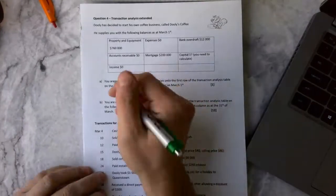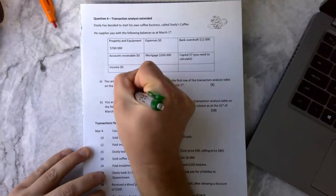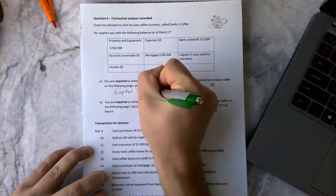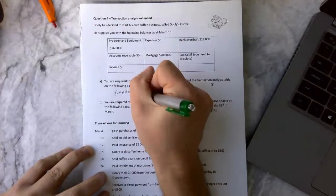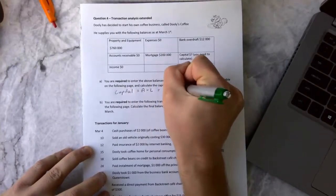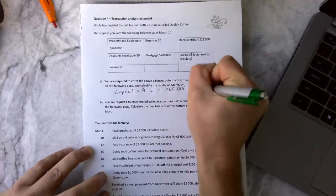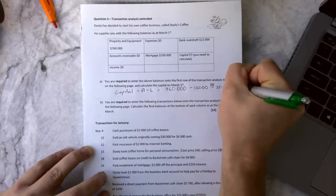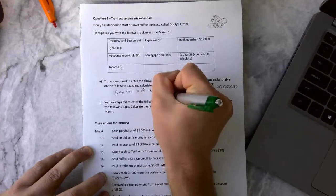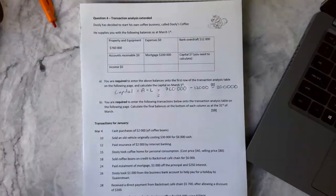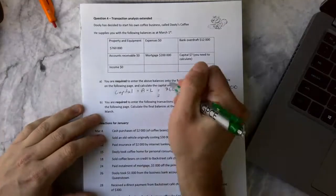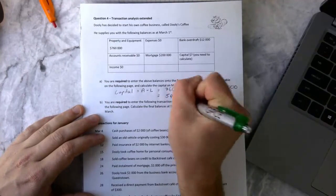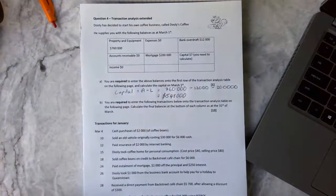So we can do that straight away. We know capital in this case is going to equal our assets minus our liabilities, because that's our simple accounting equation. So it's going to be $760,000, which is our assets, minus our $12,000, minus our $200,000. And as you can see there, that would equal $548,000.